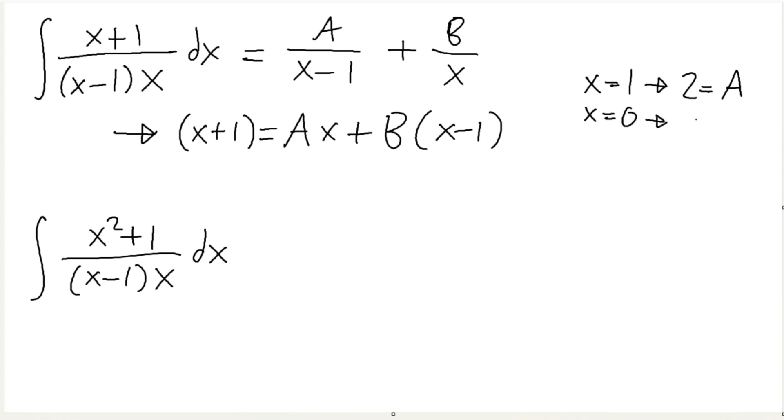We plug in x equals to 1 would give us, let's see, 2 equals A. Okay. If we let x equal to 0, then we get 1 equals to negative B. So B equals to negative 1. And so we would get, let me put orange, we would end up getting 2 over x minus 1, plus negative, well negative, it's a negative negative 1 over x. So we would get this. So here we didn't have a 1.